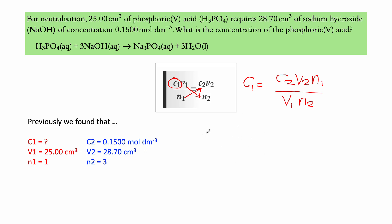And if you want to just move things around, we can do that. And C1 equals to C2, which is here, 0.1500 mole dm cube. And I'm writing the units just to make a point very soon times V2, which is 28.70 centimeter cube multiplied by n1, which is one over V1, which is 25 centimeter cube multiplied by n2, which is three.